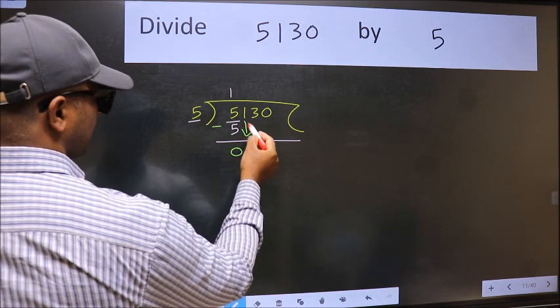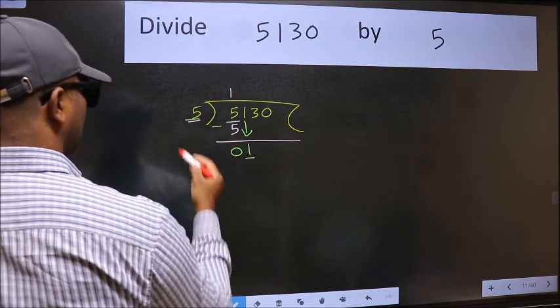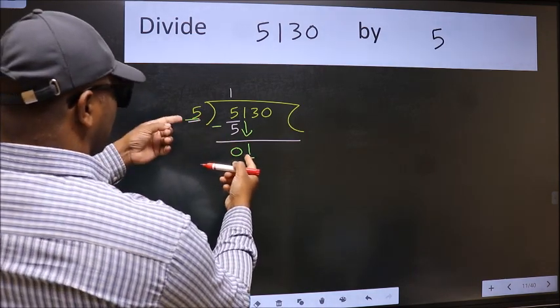After this, bring down the next number. So 1 down. Now here we have 1 and here 5. 1 is smaller than 5.